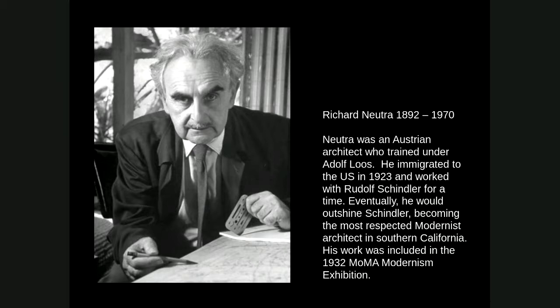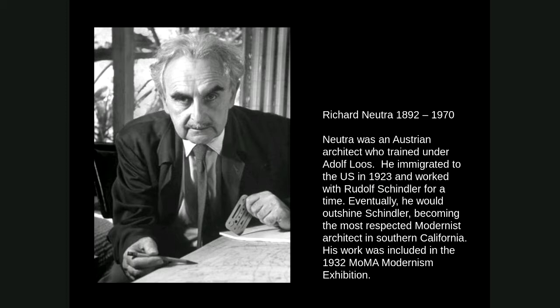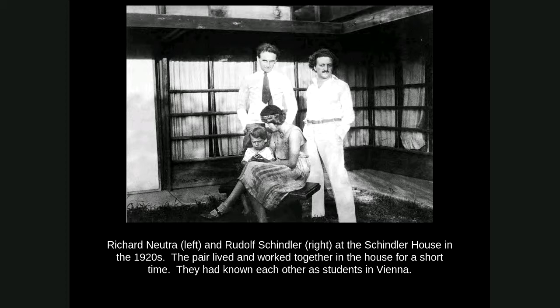He came to the United States — he actually came, again, to Chicago. He worked for Holabird and Roche, one of the great Chicago school firms that was building some of the high-rises in Chicago at the time. Then he went out to LA. He and Schindler actually knew each other back when they were both still in Europe. When he got to America, he reached out to his friend Schindler, who said, 'Don't stay in Chicago, the weather sucks — come on out to LA, it's beautiful.' So he did. They actually wound up living together in Schindler's house. This is a photo of Schindler on the right with his wife and child and Neutra on the left. They were very close — literally and figuratively — very good friends who shared a lot of ideas together.